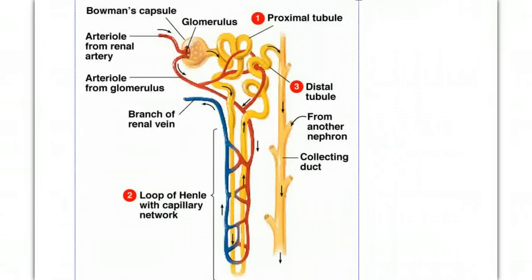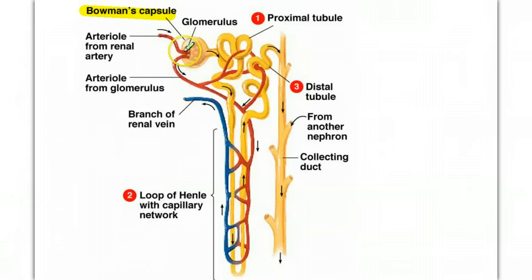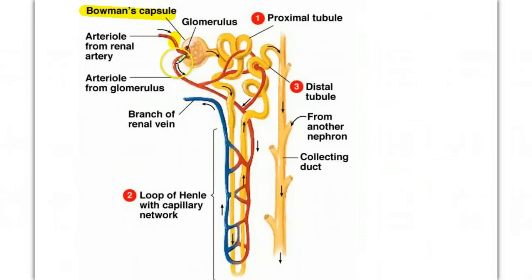Let's look at the anatomy of the individual nephron. We start with a capsule called the Bowman's capsule. Inside the Bowman's capsule is a capillary bed where an arteriole coming in breaks into a capillary bed. This capillary bed is extremely permeable — it's very leaky. The blood that goes into this capillary bed is under tremendous pressure because the afferent, or entering arteriole, is dilated and lets a lot of blood come in, while the efferent, or exiting arteriole, is constricted. So it builds up a lot of pressure, and we're squeezing most of the contents out of the blood into the Bowman's capsule.